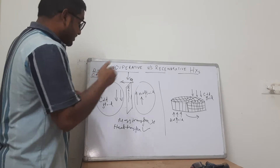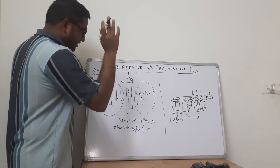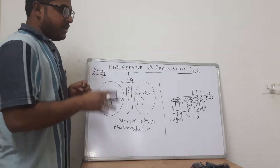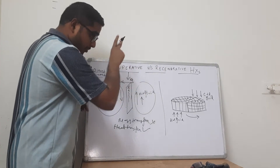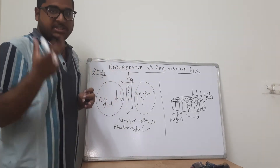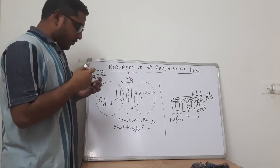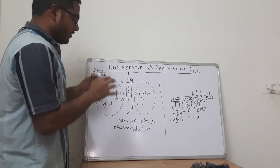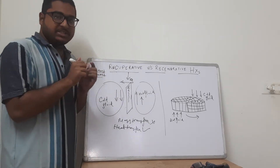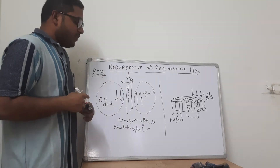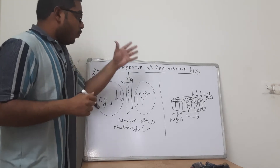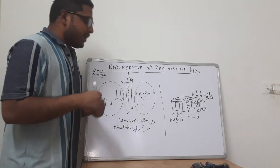As we know, the shell and tube heat exchanger is a recuperative type of heat exchanger. The plate heat exchanger is also a recuperative type. In fact, most of the heat exchangers used in industry are recuperative types.